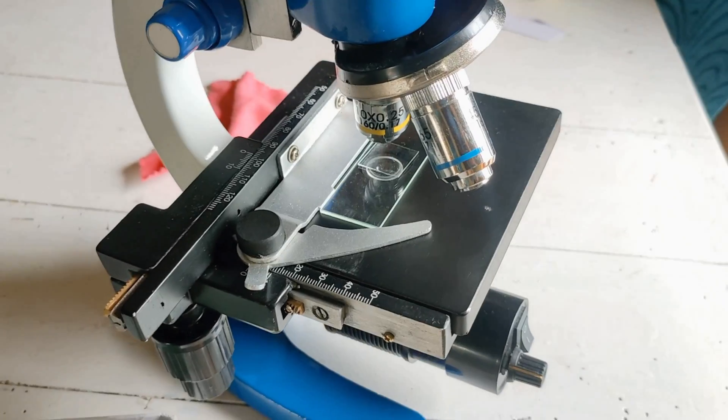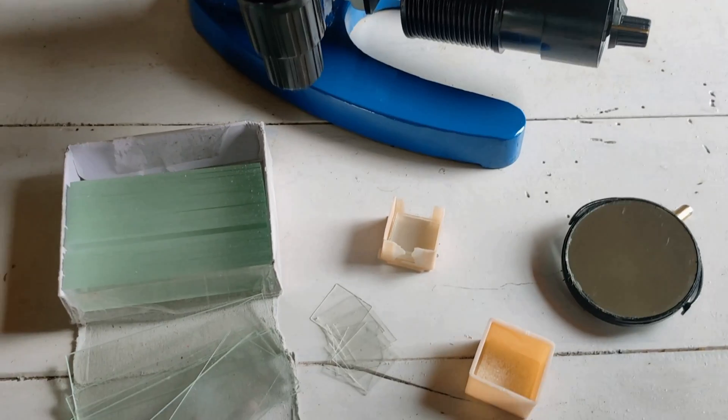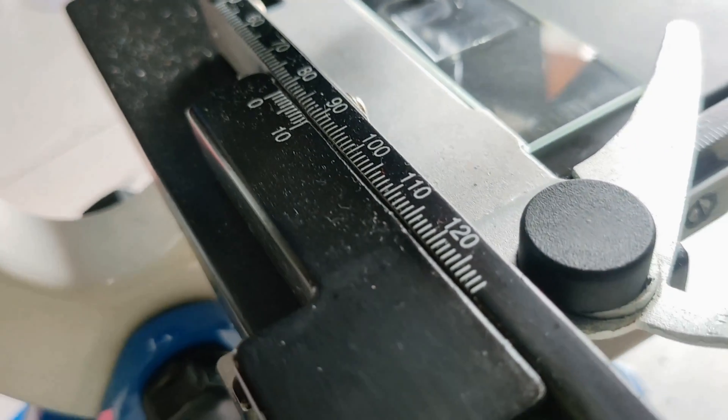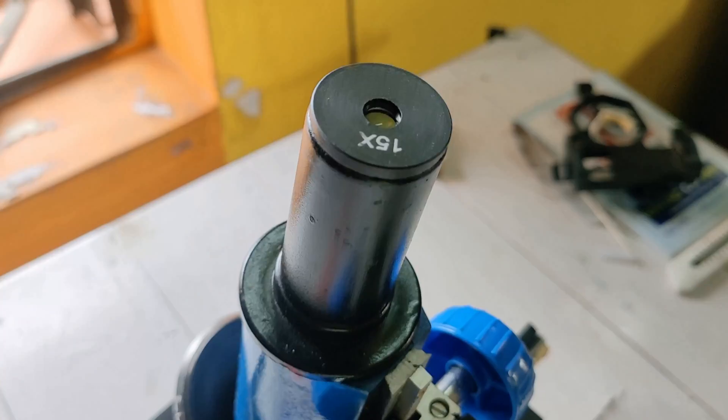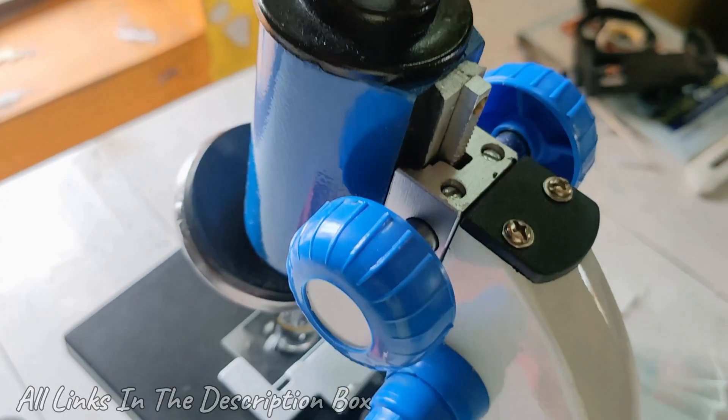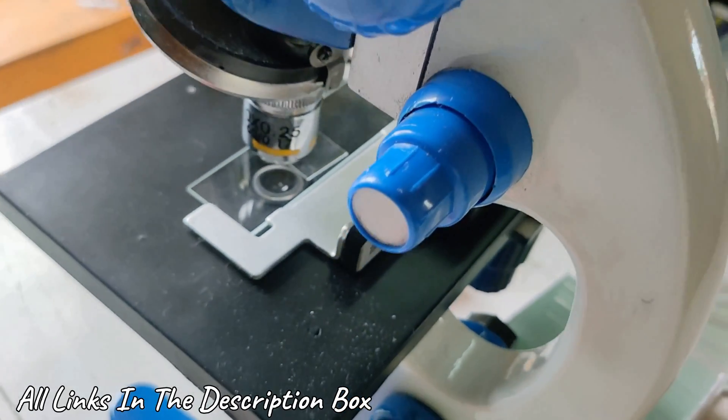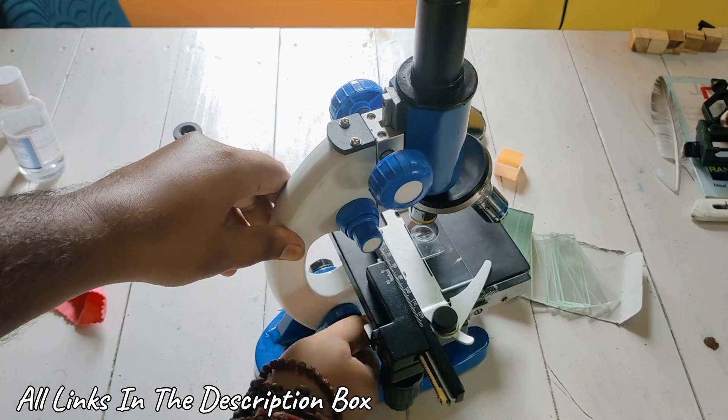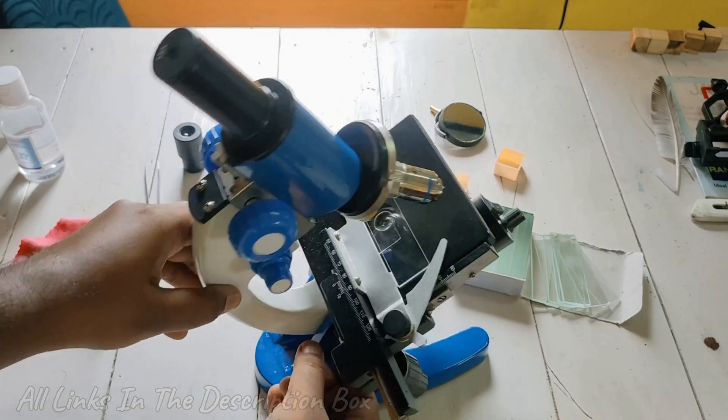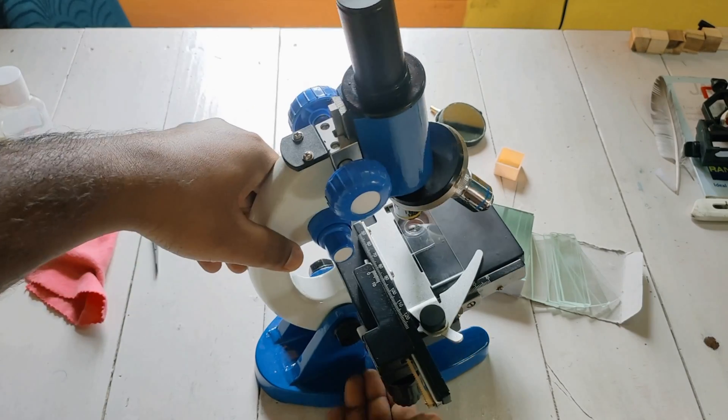So guys, this is the whole microscope along with all its parts. I will share the product link in the description box down below where you can check the product online or contact the seller Anand Traders for more details and buying options for this microscope. One thing I forgot - by twisting this knob you can adjust the microscope alignment as you like.